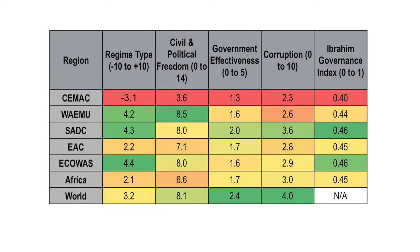The first column is regime type, measured by the Center for Systemic Peace, on a scale of negative 10 — a hereditary monarchy — to positive 10 — a full-fledged participatory democracy. Civil and political freedom is more self-explanatory, and so on with government effectiveness, corruption, and the Mo Ibrahim Index. What we can see clearly here is that CEMAC as a group performs well below other regional economic communities in Africa, well below Africa as a whole, and also well below the average score for the world. This table shows pretty clearly that the CEMAC region is suffering from poor governance across a number of different metrics.